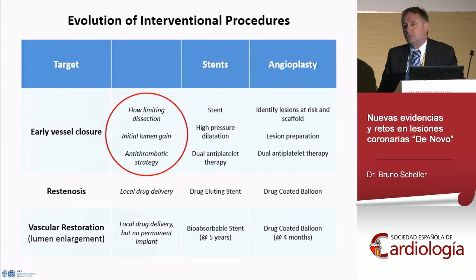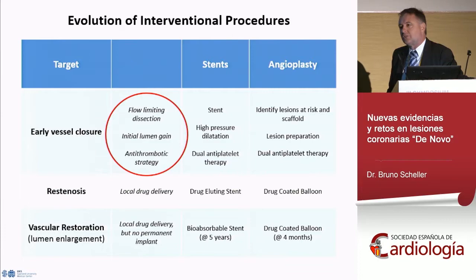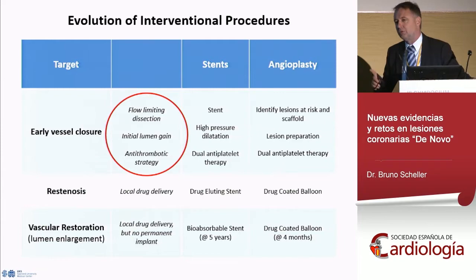The reasons for early vessel closure were flow-limiting dissections, and stents were initially developed to cover those. In the mid-1990s, as stent use increased, a new phenomenon became a real clinical problem: acute and subacute stent thrombosis. This problem was solved with the introduction of dual antiplatelet therapy. Most younger interventional cardiologists believe they can sleep at night because they implant stents, but the most important thing is dual antiplatelet therapy.